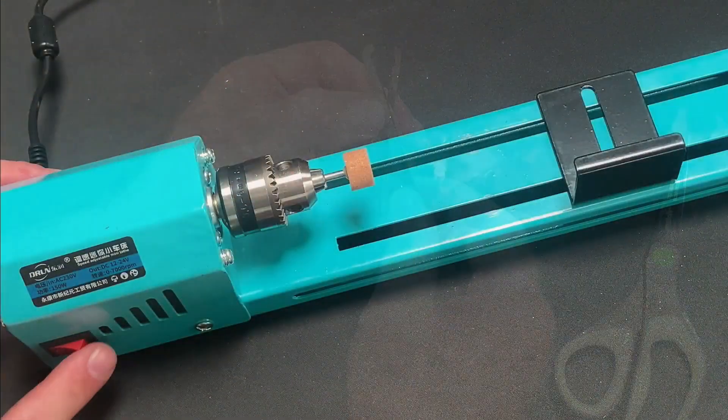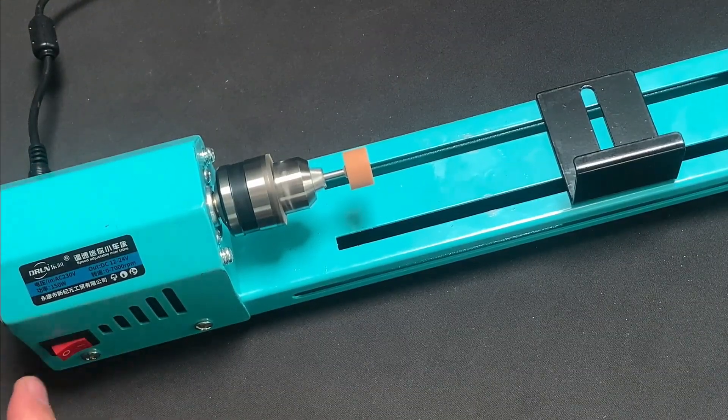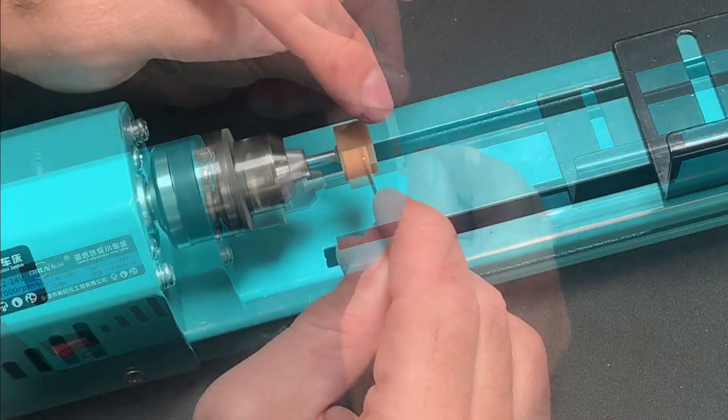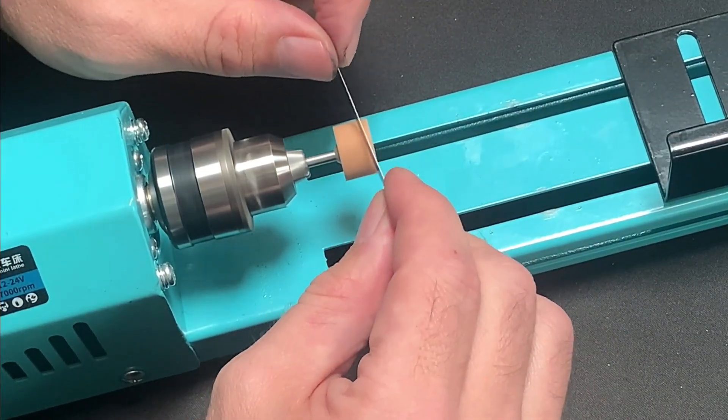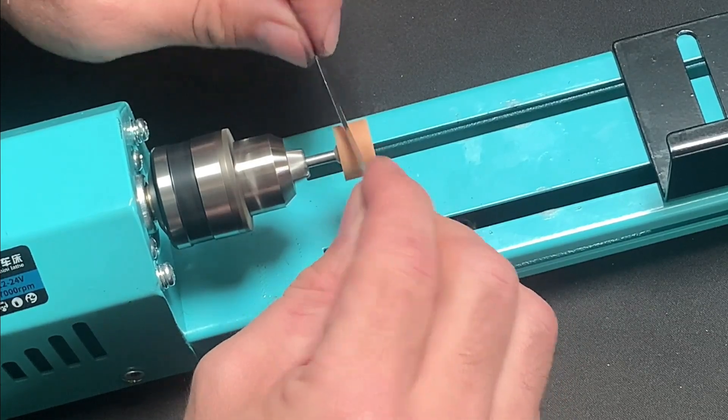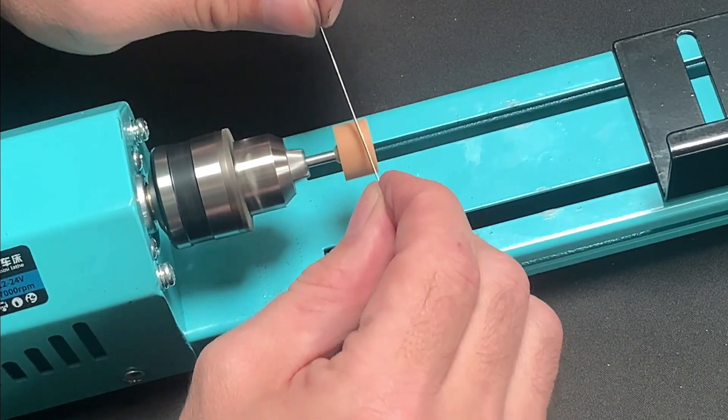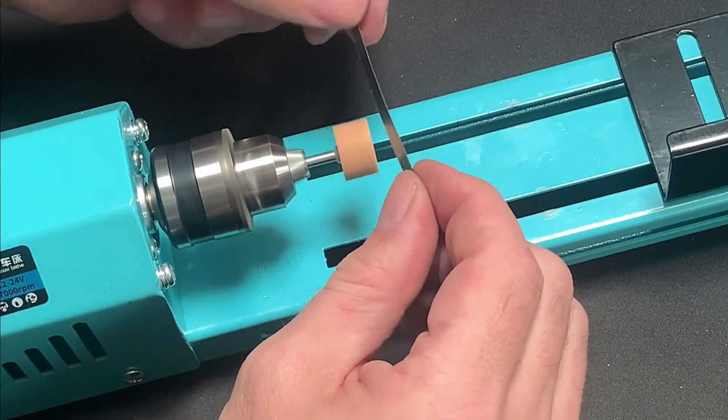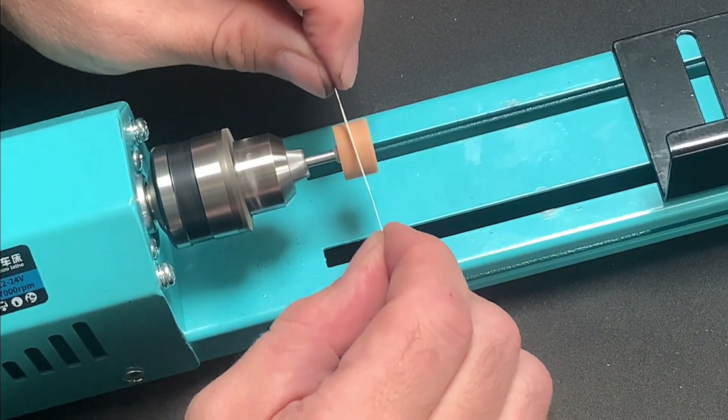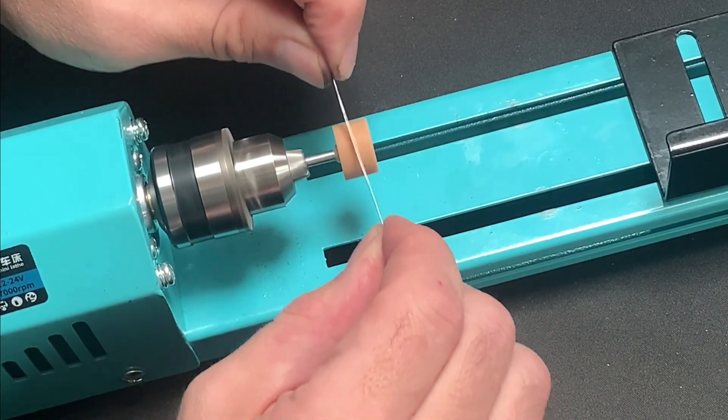Once I cut out the rough profiles I tidied up the edges of the tangs using a mini lathe which I've recently picked up and I'll be doing a review of this soon. I simply attached my grinding and polishing wheels to the head of this tool and this freed up both of my hands for more precise and safe work.